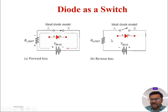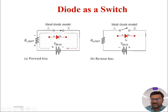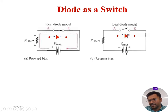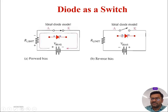We can observe here. Coming to reverse bias condition, as per our statement, if the anode terminal is applied to a less potential compared to cathode terminal, then the diode goes to reverse bias. The P-type of PN junction is connected to negative terminal of the battery and positive terminal of the battery is connected to cathode terminal of the diode. Then the anode potential is less than the cathode potential, as a part of which diode goes to off state or it is switched off.